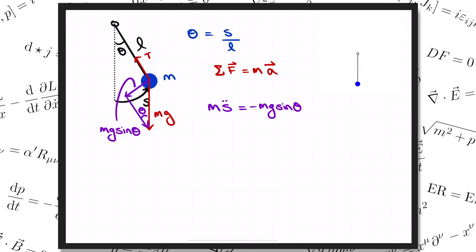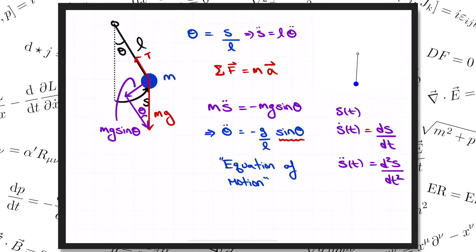I'm using dots here to denote rates of change with respect to time. So if s of t is the position as a function of time, then s dot equals ds by dt is the velocity, and s double dot is the acceleration, the second derivative of s with respect to time. I want to write everything in terms of theta though. So I'm going to use the fact that s double dot is equal to l times theta double dot in order to rewrite the f equals ma equation as theta double dot equals minus g over l sine theta. This is called the equation of motion for theta. It's the differential equation that governs the motion of the pendulum.